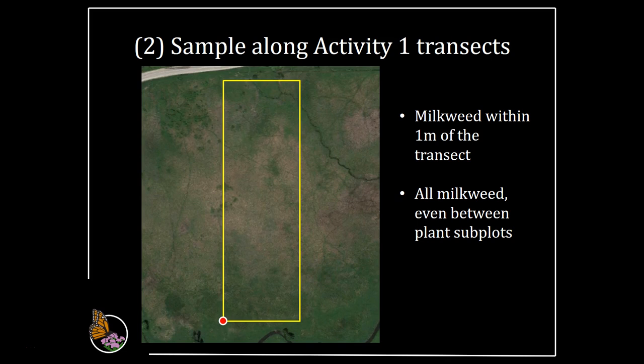If you are conducting Activity 1, the Milkweed and Blooming Plants Survey, you can also examine all milkweeds along those transects. As you walk each transect and record data for Activity 1, stop to examine all the milkweeds within a meter of the transect, including those between your subplots. Since you're doing Activity 2 more frequently than Activity 1, some of the time you'll be walking these transects only looking for eggs and larvae on milkweed, and not recording Activity 1 data.